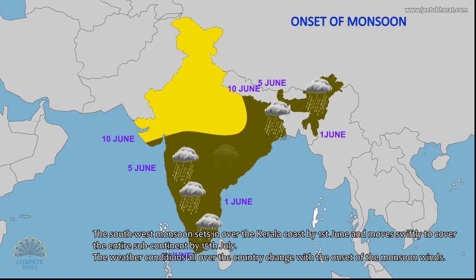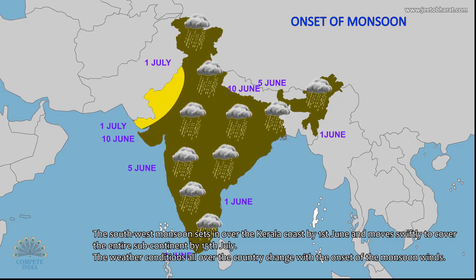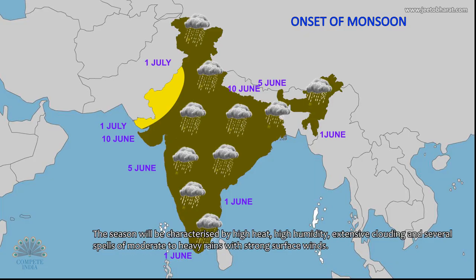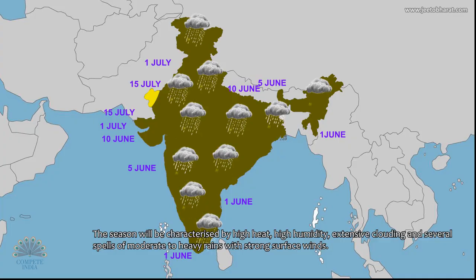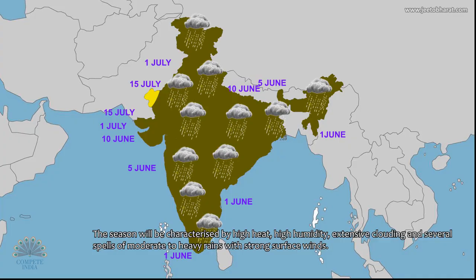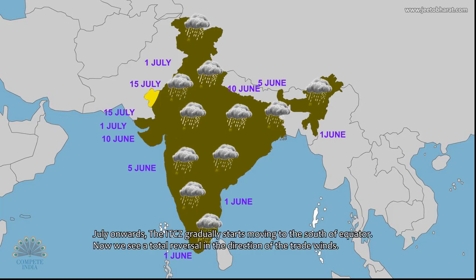The weather conditions all over the country change with the onset of the monsoon winds. The season is characterized by high heat, high humidity, extensive clouding, and several spells of moderate to heavy rains with strong surface winds.